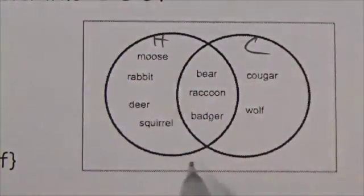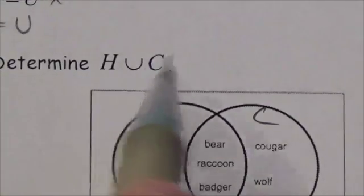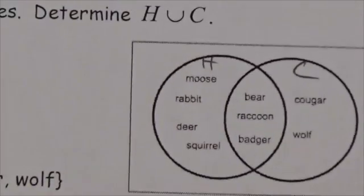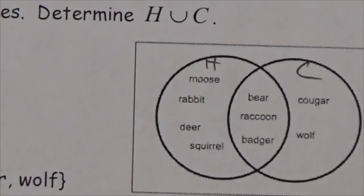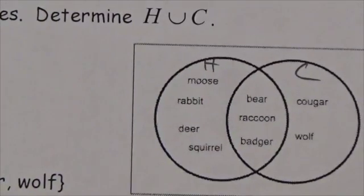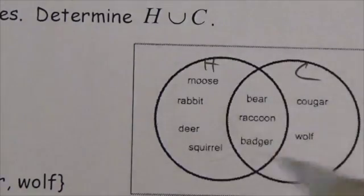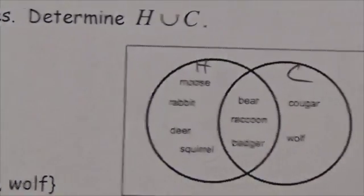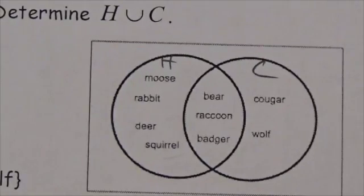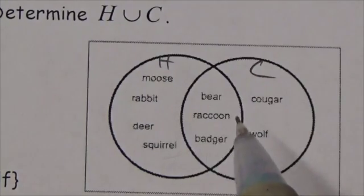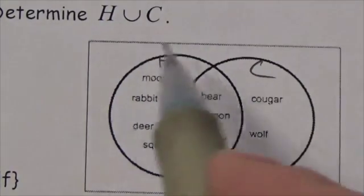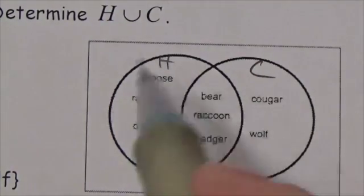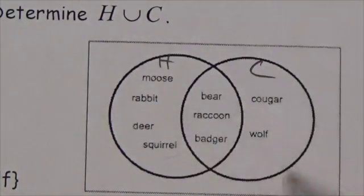I'm looking for H union C. To be a union, I need everything represented in both sets, because union means 'or'. The animal I'm looking for — I'd be happy if it was from the herbivore set or from the carnivore set.